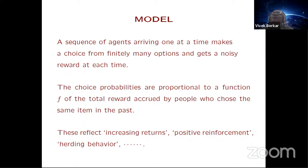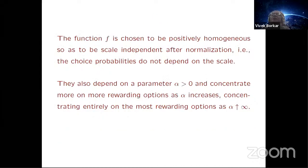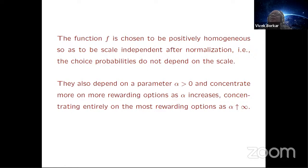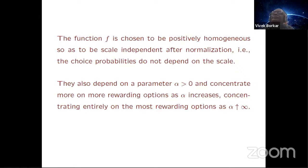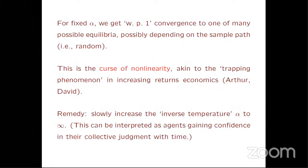There's some similarity to bandit problems, but there are many differences. The function F will be chosen to be positively homogeneous, so that when you normalize to get the priorities, it's independent of scale. There's an extra positive parameter alpha, and as alpha goes to infinity, the priorities concentrate more and more on the most rewarding options.